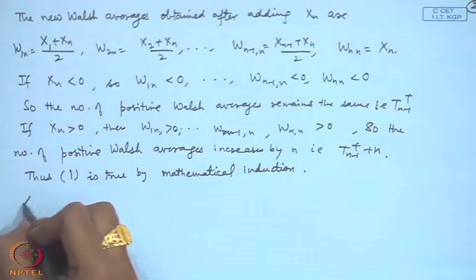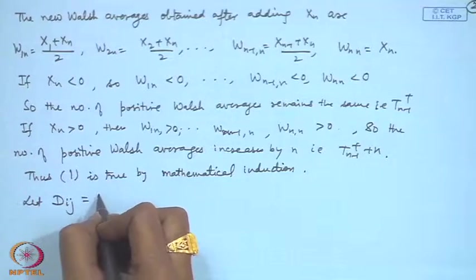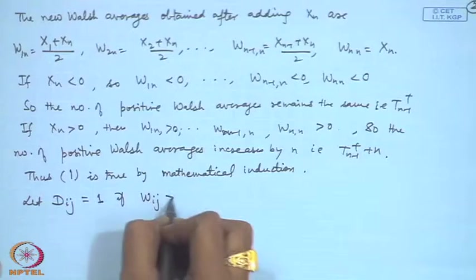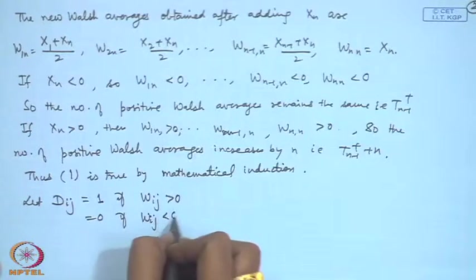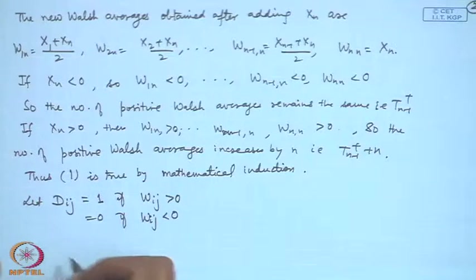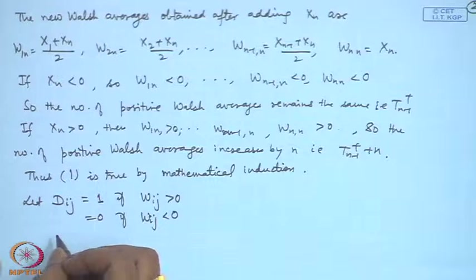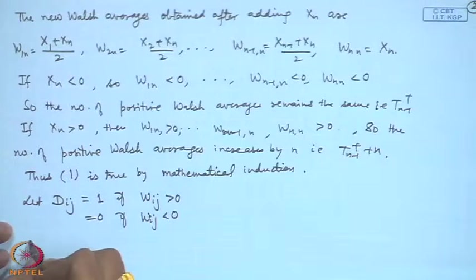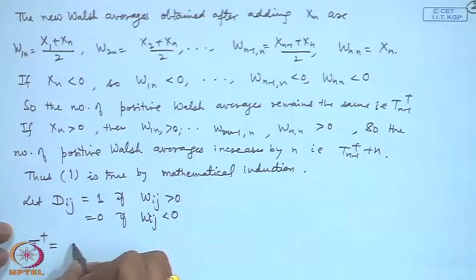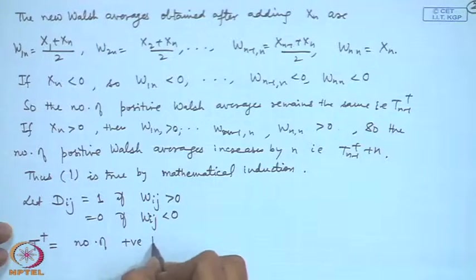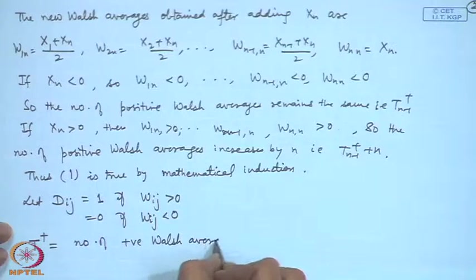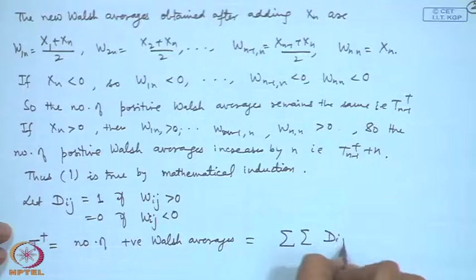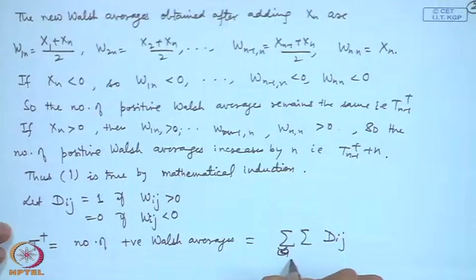Based on this, define the indicator function d_{ij} = 1 if the Walsh average W_{ij} is positive, and d_{ij} = 0 if it is negative. By the continuity assumption, P(W_{ij} = 0) = 0 so we need not consider that case. Then T+ equals the number of positive Walsh averages, which equals the double summation of d_{ij} over 1 ≤ i ≤ j ≤ n.